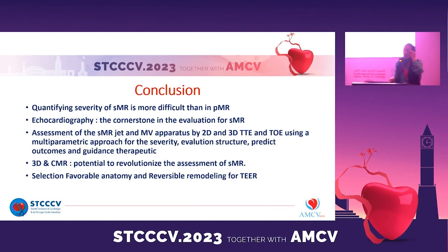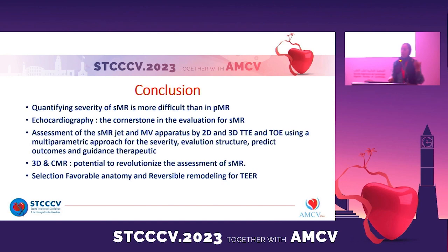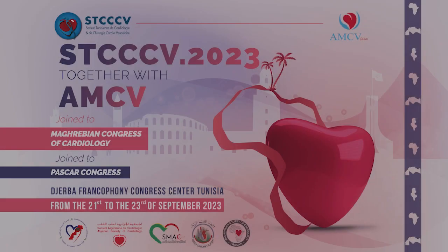In conclusion, quantifying secondary or functional MR is more difficult than primary MR. Echocardiography is the cornerstone of this evaluation — we can study the structure, severity, LV function, and feasibility of mitral repair. 3D and CMR have good potential, and perhaps in the future we will use new parameters. We must insist on careful patient selection based on LV characteristics and mitral valve anatomy.